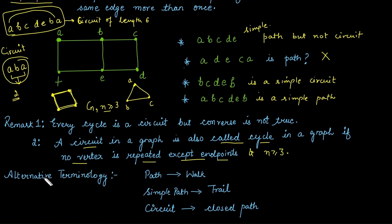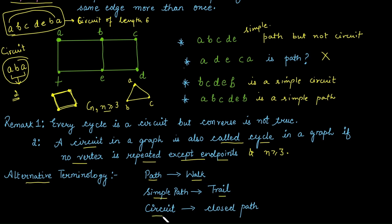Some alternate terminology: a path is also called a walk in some literature, a simple path is called a trail, and a circuit is called a closed path.